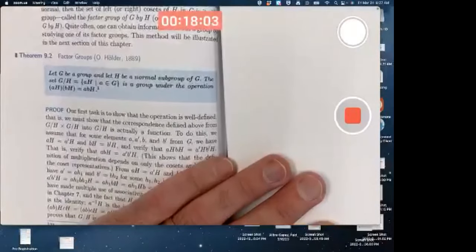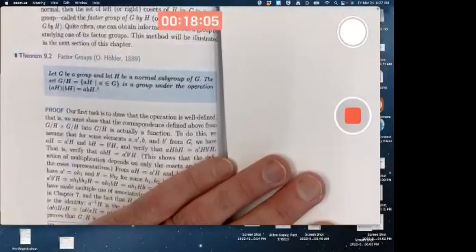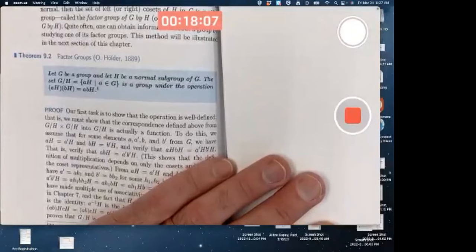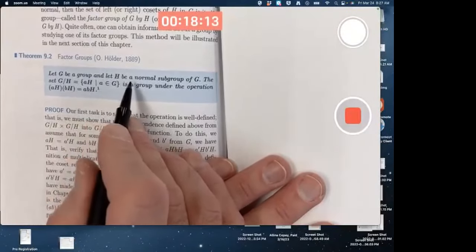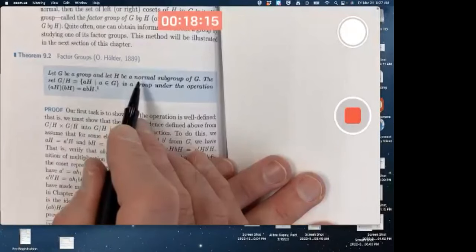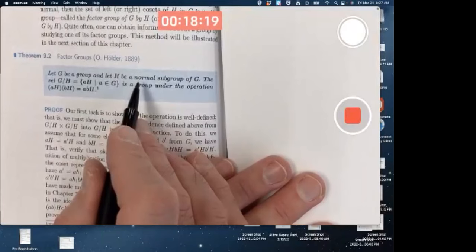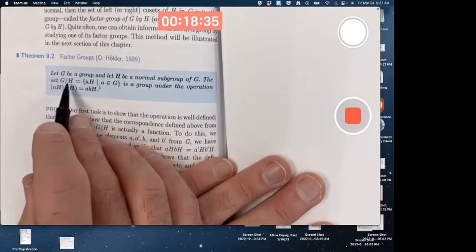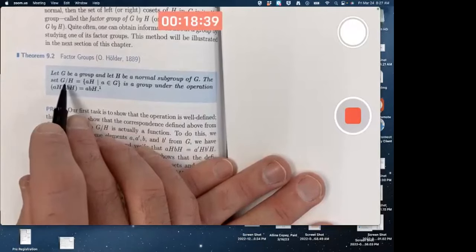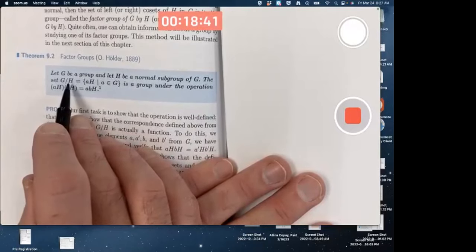Theorem 9.2 is what allows us to define factor groups, also known as quotient groups. Let G be a group and let H be a normal subgroup of G. It's got to be normal. The proof doesn't work if normality is not assumed. That's why we define the concept of a normal subgroup in the first place. That's the symbol for the factor group. G mod H for short is what I say.